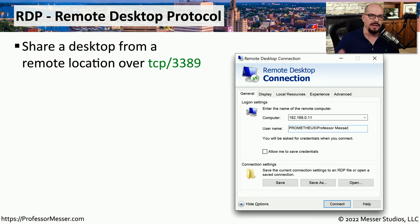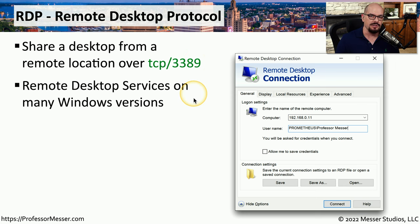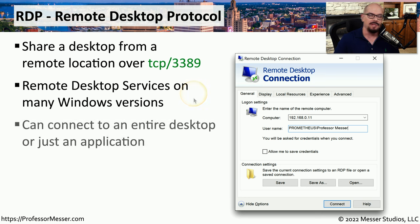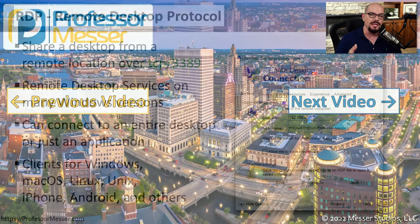If you've ever worked in a support role or on a help desk, you've probably performed some type of remote access to someone's desktop. One very popular protocol for this is RDP, or the Remote Desktop Protocol. This is the standard protocol used by Windows for remote sharing, and it commonly uses TCP port 3389. Remote desktop services are available in many editions of Windows, and most Windows installations have built-in ability to connect to or receive a remote desktop session. RDP can be used to take over and control an entire system, or just to run a single application from that server. Although RDP servers run almost exclusively on Windows, clients are available for Linux, macOS, Android, and virtually any other operating system.